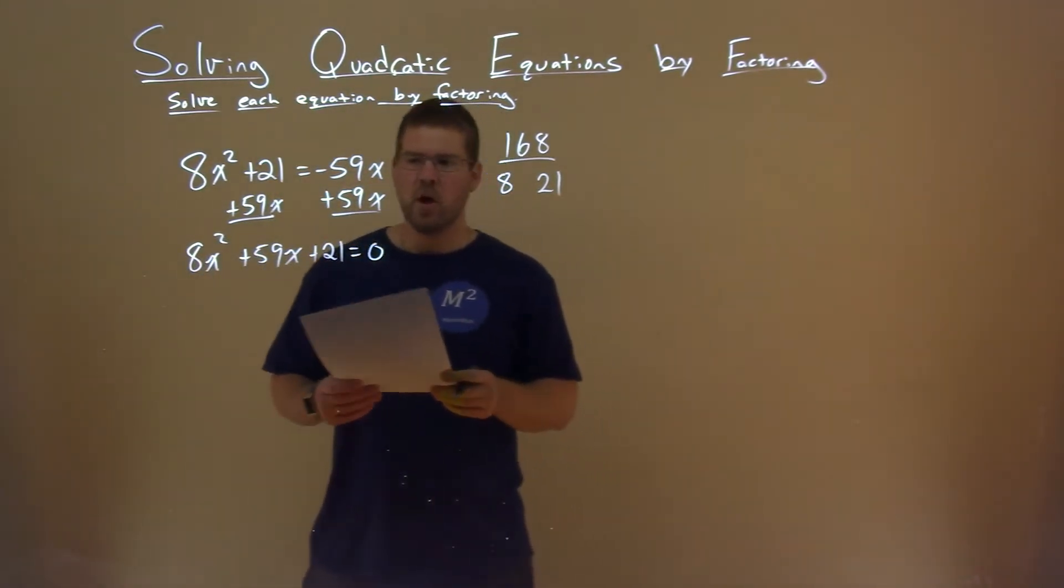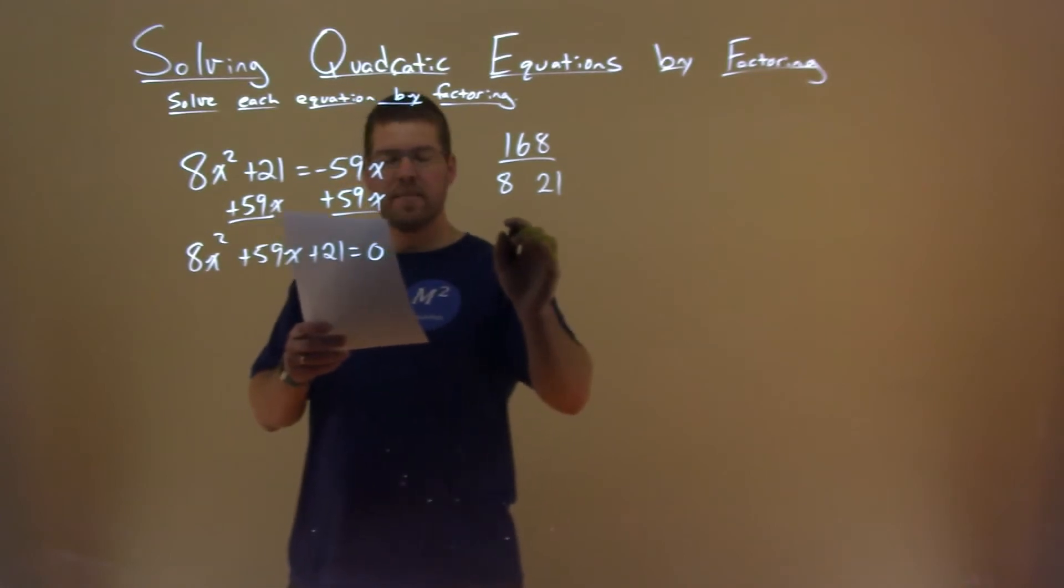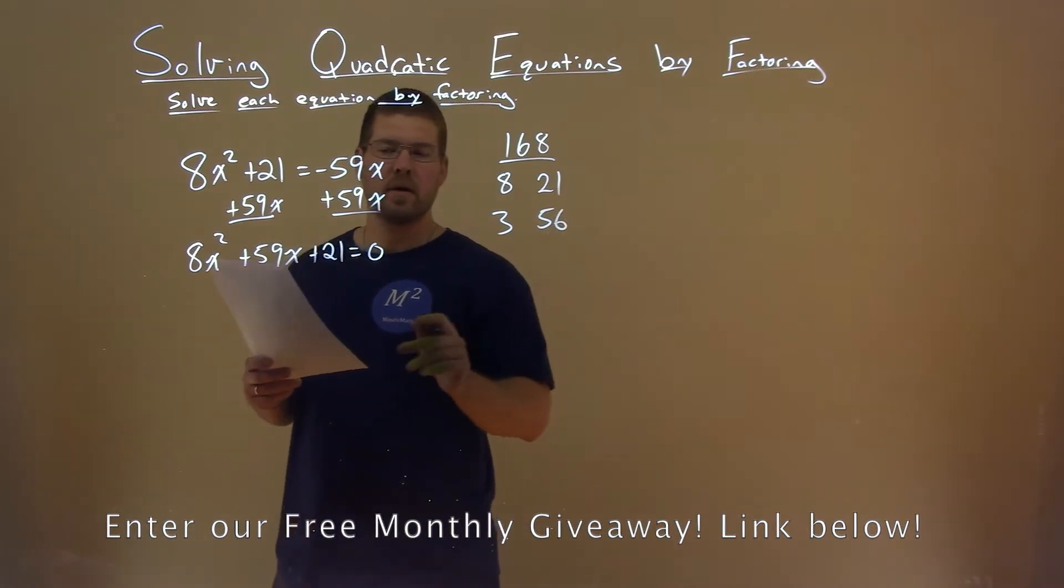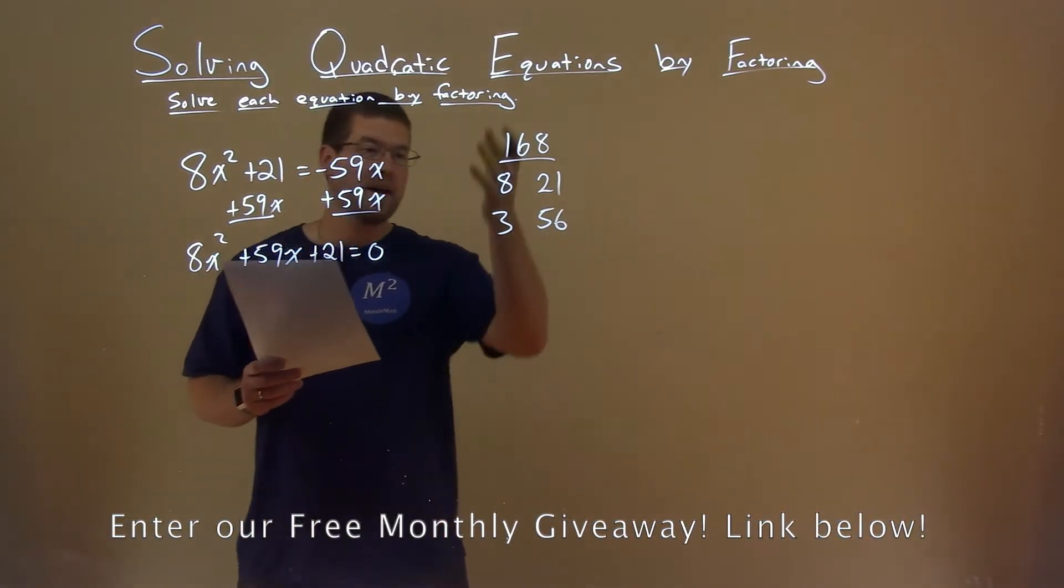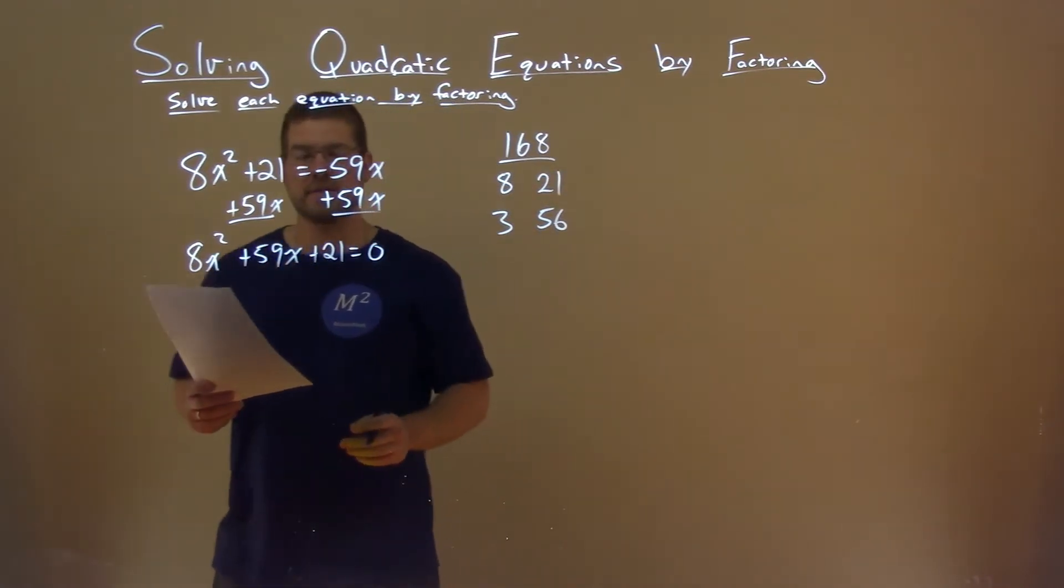But what about this 3? 3 divisible by 168, and 3 does go into 168 56 times. And we add them together, 3 plus 56 is 59x. So I'm not going to go through the other factors. I just kind of spitballed some and got one on my second try.